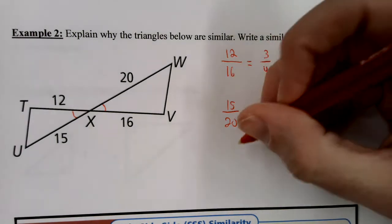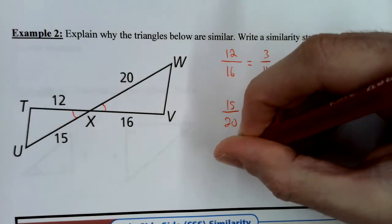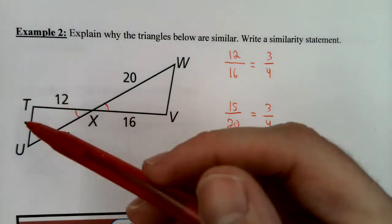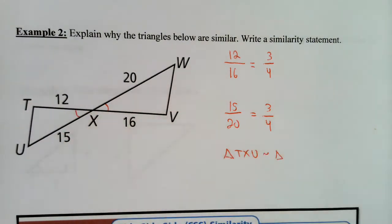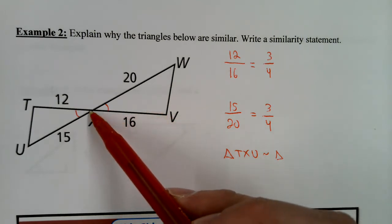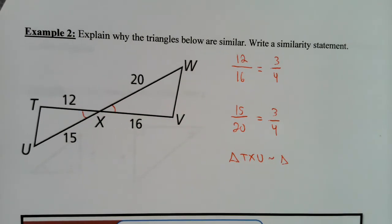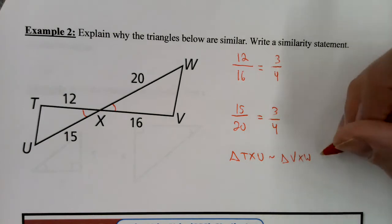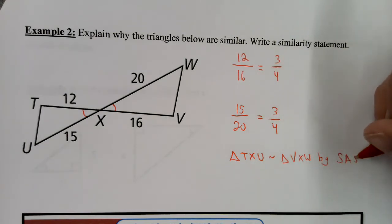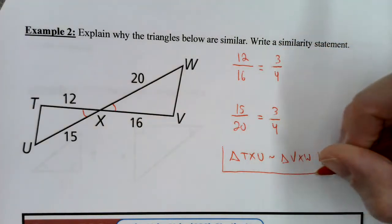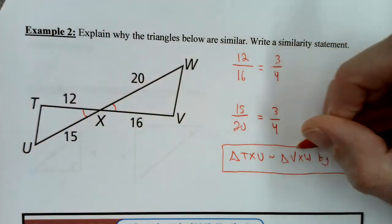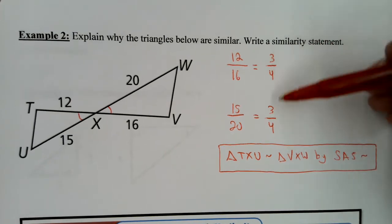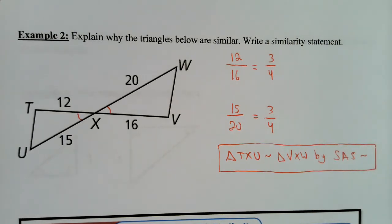Be careful when you label the similarity statement. I'm going to say triangle TXU is similar to triangle VXW by Side-Angle-Side Similarity. On a quiz, I want to see that you show the ratios equal the same number.